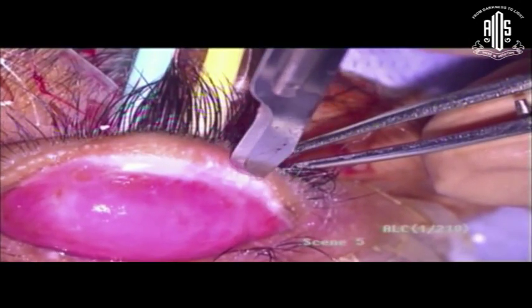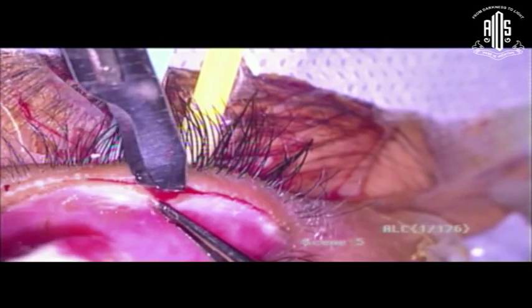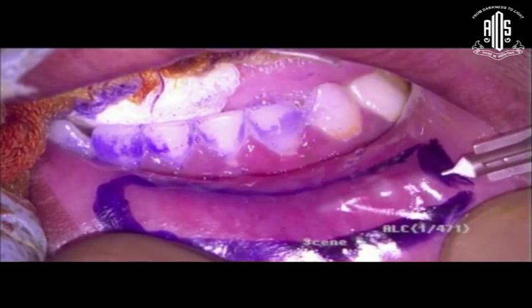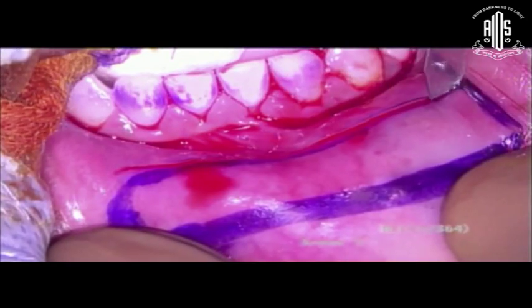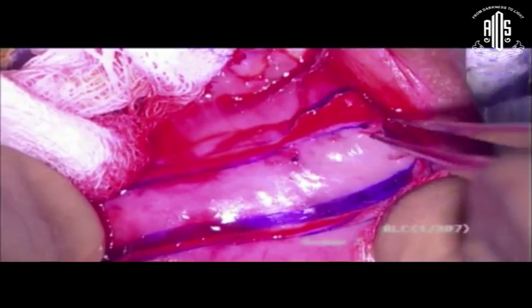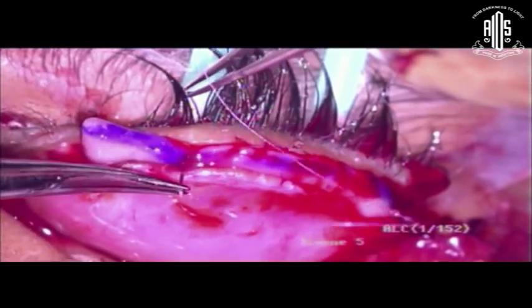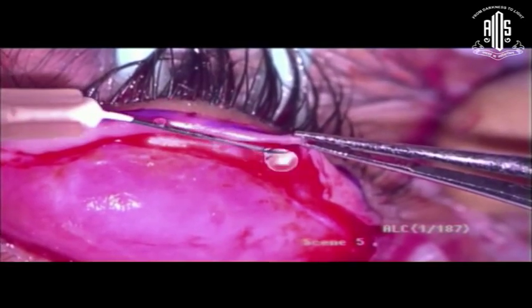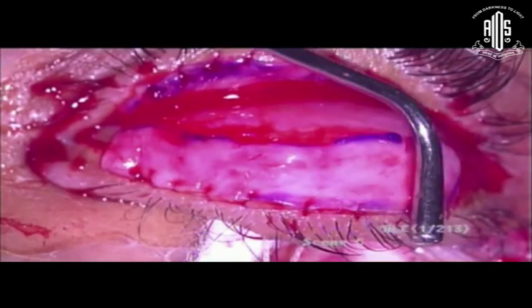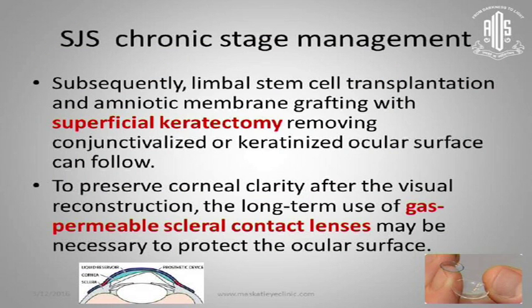For mucous membrane grafting: evert the lid, use a Bard-Parker 15 blade, go just at the edge of where the Meibomian glands are and cut, where you can see the keratinization. Then take a generous piece of buccal mucosa after marking it — take it out thick, trim it down, remove the orbicularis muscle, suture the part near the eyelashes with vicryl, and glue the rest into place. This is truly eye-saving surgery, as most keratinization and non-healing epithelial defects occur because the keratinized upper lid surface is continuously rubbing against the cornea.